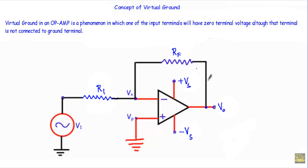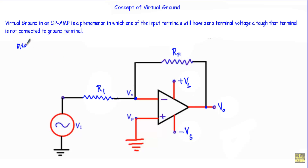Let's say I have an operational amplifier in an inverting amplifier structure. Here you will see this output terminal is connected to this inverting terminal. When this output terminal is connected to this inverting terminal, that means the operational amplifier is in negative feedback.